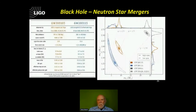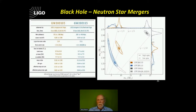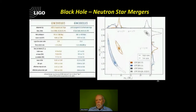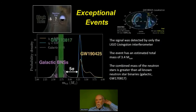This shows the first observations of black hole-neutron star mergers, which we announced last spring. We've now seen all three types of compact binary mergers. We've looked at details including tidal effects, but it's just the first indication from a couple of events, and we should start to see many more soon.